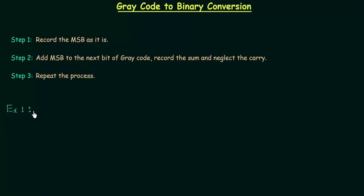In example number one, the gray code is 1110. This is the gray code and we want to convert this gray code to binary. So let's see what's there in step number one.